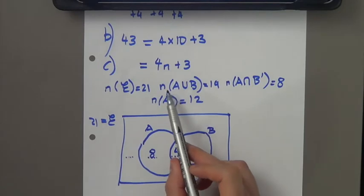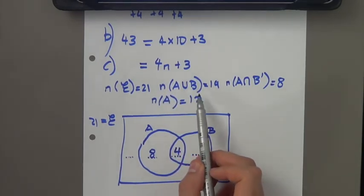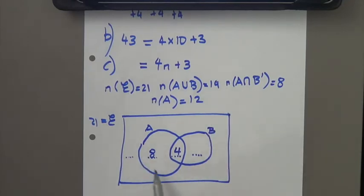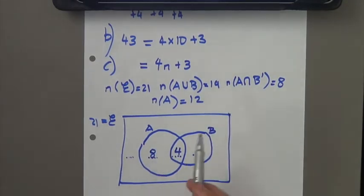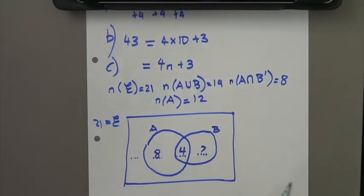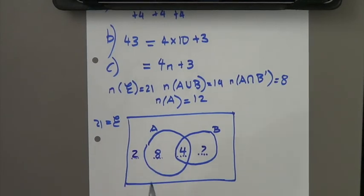Now, what's the next thing it says? It says, the number of elements in A and B is 19. Well, I've got 12 here. So, what do I need to add to 12 to make 19? 7. So, and then lastly, it says 21 altogether. So, 19 plus what gives me 21? Well, it's 2. So, I've answered this particular question. And, that's the end.